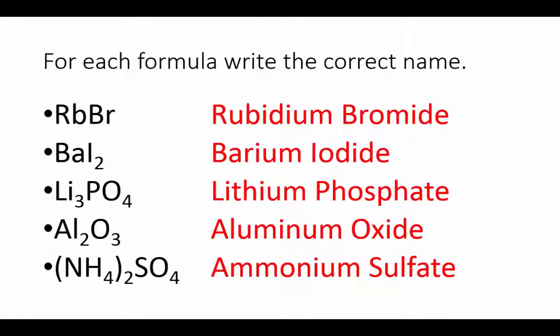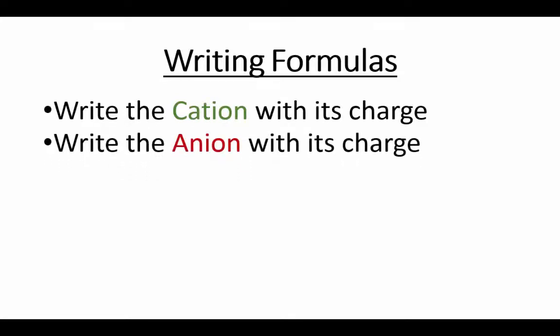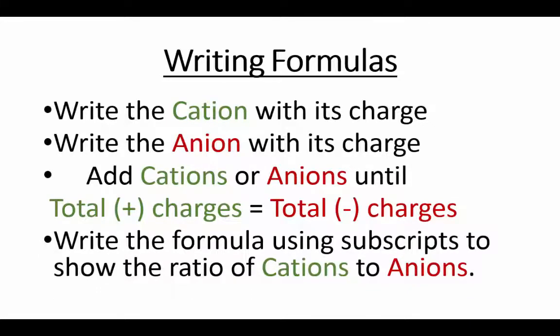Next, we're going to learn how to write formulas for ionic compounds. It's also a pretty straightforward process. Once you've identified the cation, write down its formula with its charge. Identify the anion and write its formula with its charge. Then add cations or anions until the total positive charges equal the total negative charges—that is, you've made a neutral compound. Then write the formula using subscripts to show the number of cations and anions that you've added together to reach that net charge of zero.